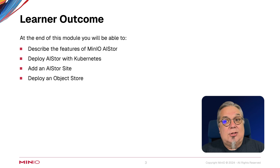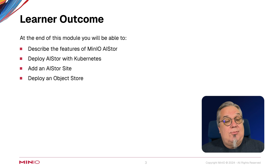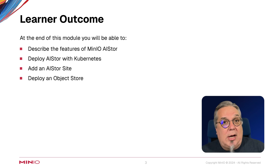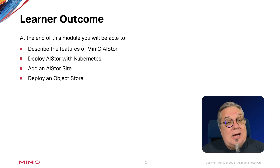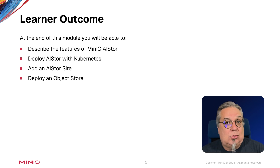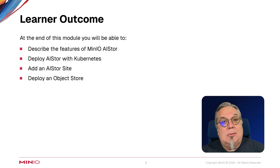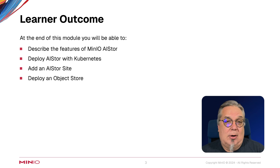At the end of this module, you will be able to describe the features of MinIO AI Store and why you might want to use it in your own environment, deploying AI Store with Kubernetes and also adding an AI Store site to an existing AI Store deployment, and you'll also be able to deploy an Object Store.